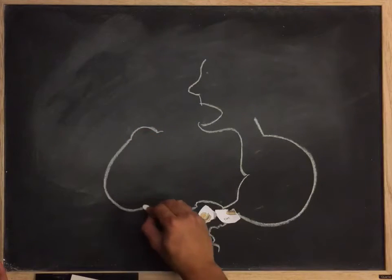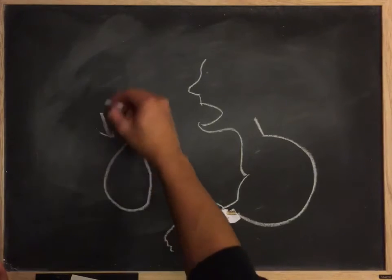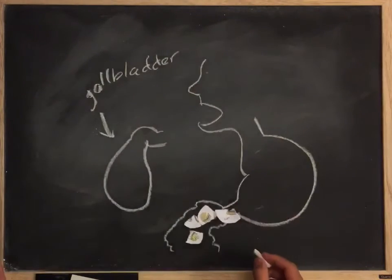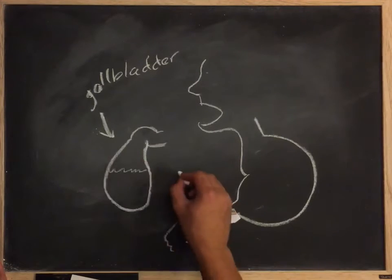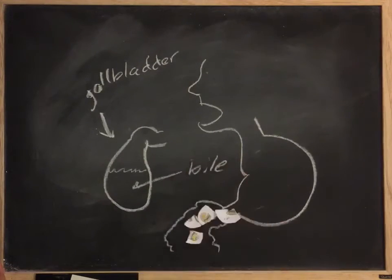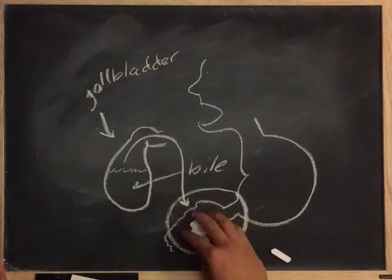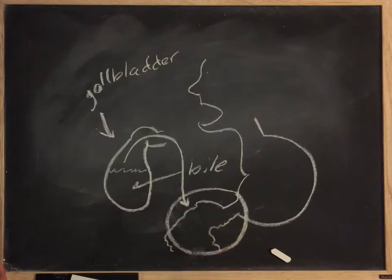However, fatty foods such as the ones I mentioned are a little bit harder to break down and absorb compared to other types of foods. Here's where the gallbladder comes in. Our gallbladder stores bile, and this bile is made up of different organic molecules which ultimately help break down the fatty foods that we eat in order for our body to absorb them more easily.